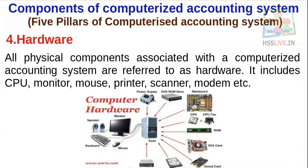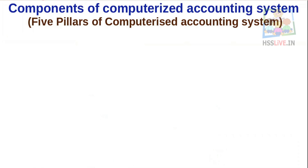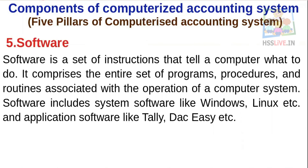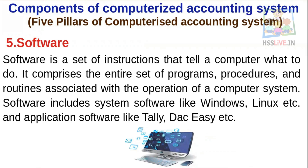Number five: Software. Software is a set of instructions that tell a computer what to do. It comprises the entire set of programs, procedures, and routines associated with the operation of a computer — including the operating system and application software like Tally, EasyGenu, etc.